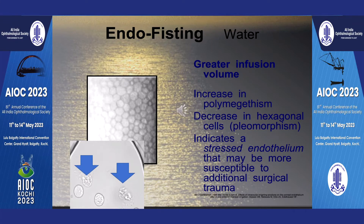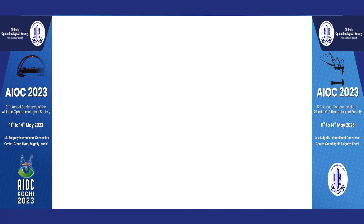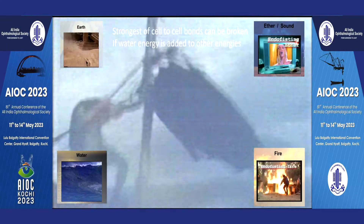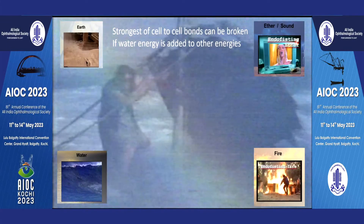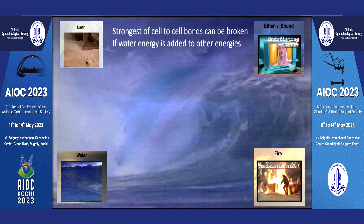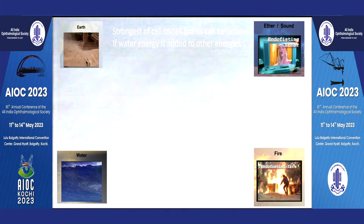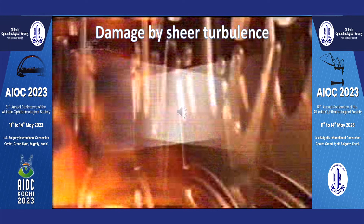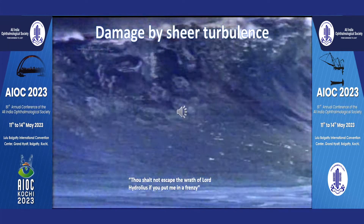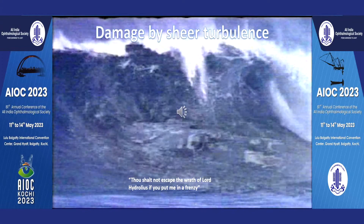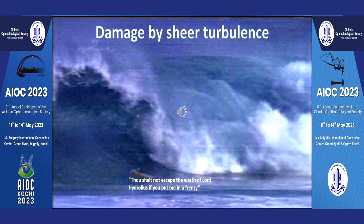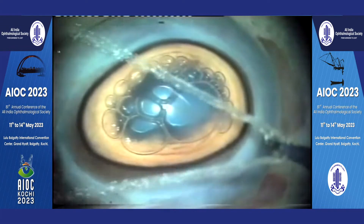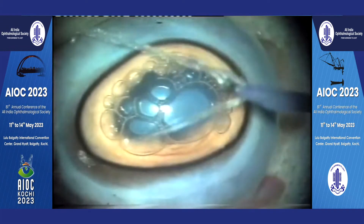The volume of water which is used is the most important factor. The major way in which water causes damage is through shear turbulence. The only way to gauge the degree of turbulence in the anterior chamber is to observe the movement of the air bubble while carrying out actual surgery.